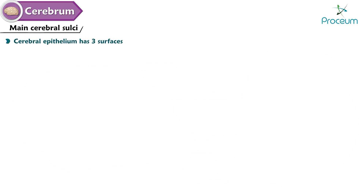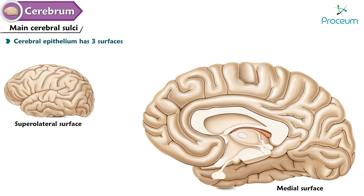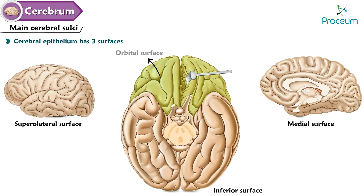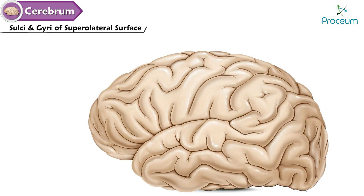The cerebral hemisphere has three surfaces: the superior lateral surface, the medial surface, and the inferior surface, which has orbital and tentorial parts.